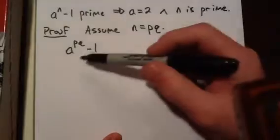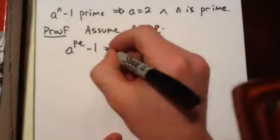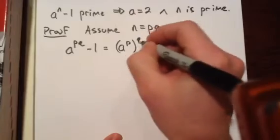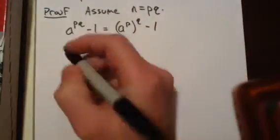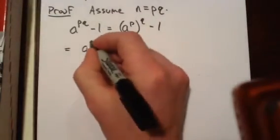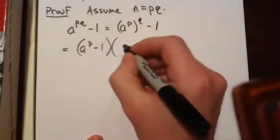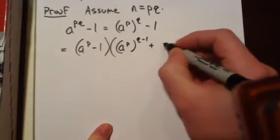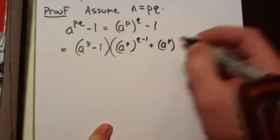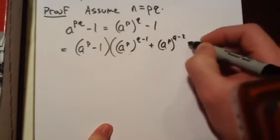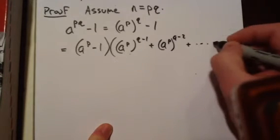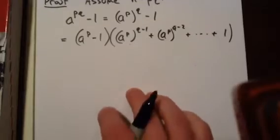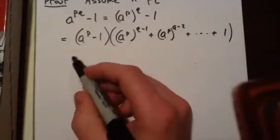So consider a to the pq minus 1. This is equal to a to the p to the q minus 1. And we can write this as a to the p minus 1 times a to the p to the q minus 1 plus a to the p to the q minus 2. And we keep reducing the power until we get to 1. And we can see that this is a composite number.